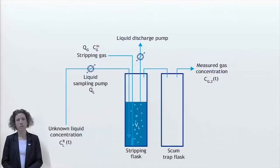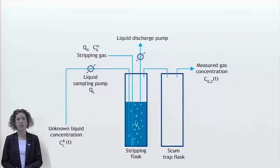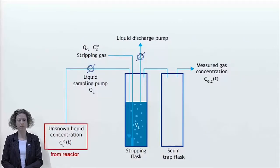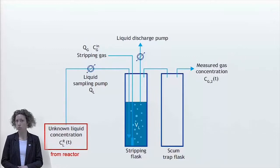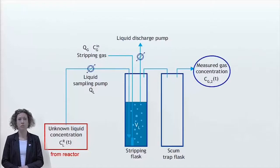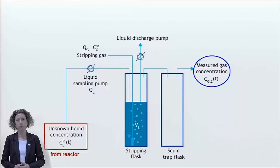The gas stripping device consists of a gas stripping flask and a scum trap flask. We want to know the concentration of dissolved N2O in a reactor. This concentration is denoted as CLR and is a function of time. A liquid stream is sampled from the reactor and sent to the stripping flask, pumped at a flow rate QL. The liquid volume in the stripping flask is kept constant by pumping out the liquid at a certain level. At the same time, a stripping gas is bubbled through the liquid in the stripping flask.